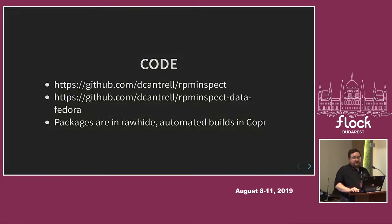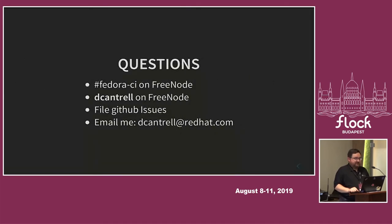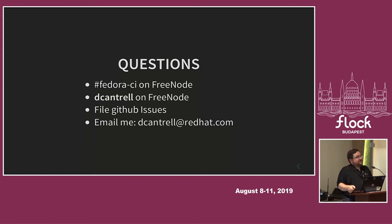The code lives on GitHub right now. There's an organization project called RPM Inspect that I'm going to move everything to — I haven't done that yet. Packages are in Rawhide, automated builds are in COPR. For discussion: Fedora CI on Freenode, pound OSCI internally. I'm dcantrell. GitHub issues is where to tell me about problems.